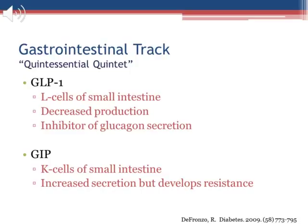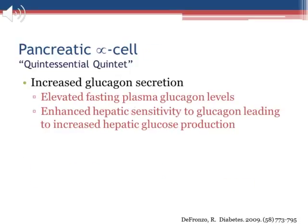GLP-1 is also a potent inhibitor of glucagon secretion. The lack of GLP-1 contributes to the paradoxical rise in plasma glucagon secretion and impaired suppression of hepatic glucose production that occurs after ingestion of a mixed meal. GIP is secreted by the K cells of the proximal small intestine, and production is actually increased, but there is resistance to the stimulatory effect of GIP on insulin secretion. In contrast to GLP-1, plasma levels of GIP are elevated in type 2 diabetes yet circulating plasma insulin levels are reduced, suggesting resistance to GIP's stimulatory effect. Studies have shown that tight glycemic control can restore the beta cell's insulin secretory response to GIP — thus, beta cell resistance to GIP is another manifestation of glucotoxicity.